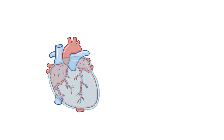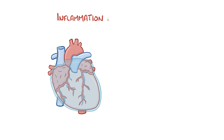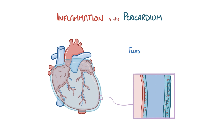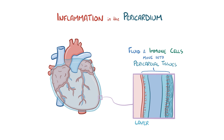Regardless of the cause, inflammation in the pericardium means that fluid and immune cells start moving from tiny blood vessels in the fibrous and serous pericardium into the tissue, or interstitium, of those layers, making the layer itself thicker and more boggy — like a piece of dry flat pasta that gets cooked and thickens up as it soaks up fluid.